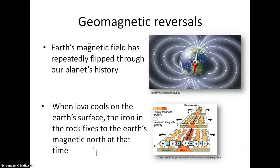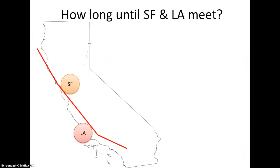Now let's take a look at the last question in the lab, which asks you to use information from questions 9 through 11 to calculate how long it will take for San Francisco and Los Angeles to meet along the San Andreas Fault. This is a very rough estimate, but if you do the math right, you will come up with an answer that is within a quarter of a million years of the current estimates of scientists in the field.